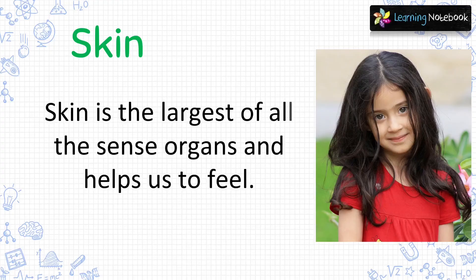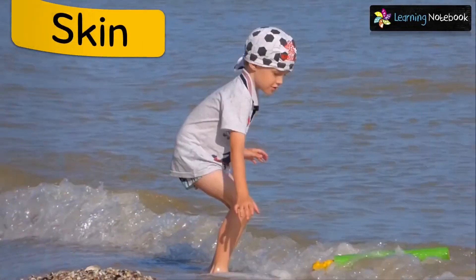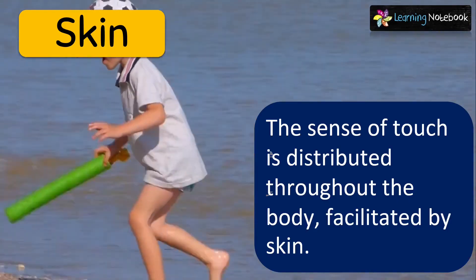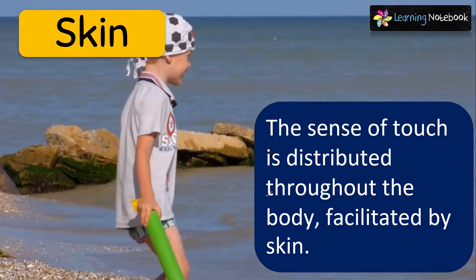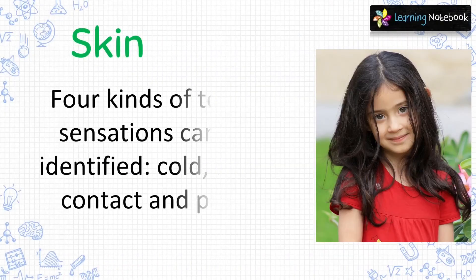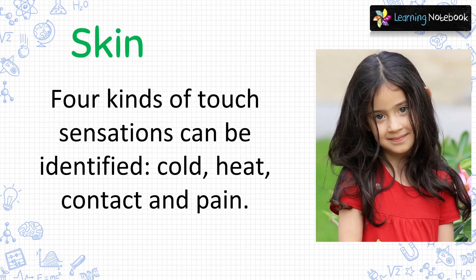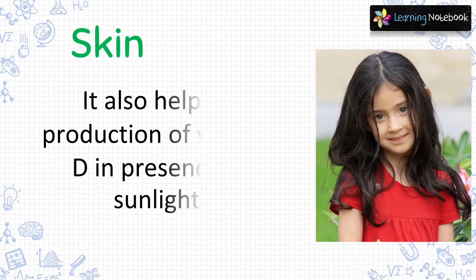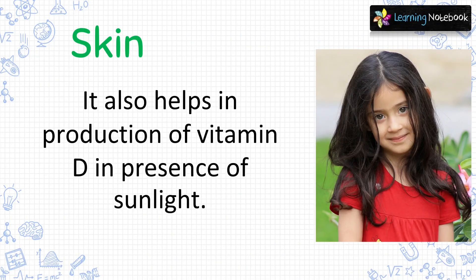Now, the last sense organ is the skin. Students, skin is the largest of all the sense organs and it helps us to feel. The sense of touch is distributed throughout the body, facilitated by our skin. Four kinds of touch sensations can be identified which are cold, heat, contact and pain through skin. The skin also helps in the production of vitamin D in the presence of sunlight.